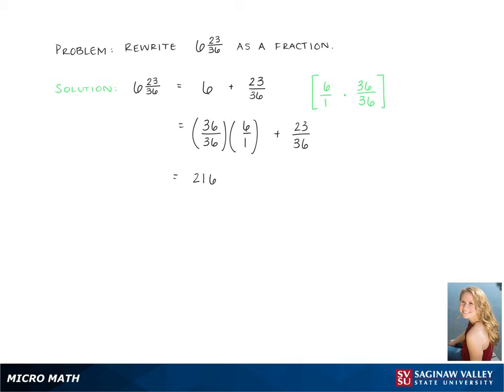So doing this gives us 216 over 36 plus 23 over 36.